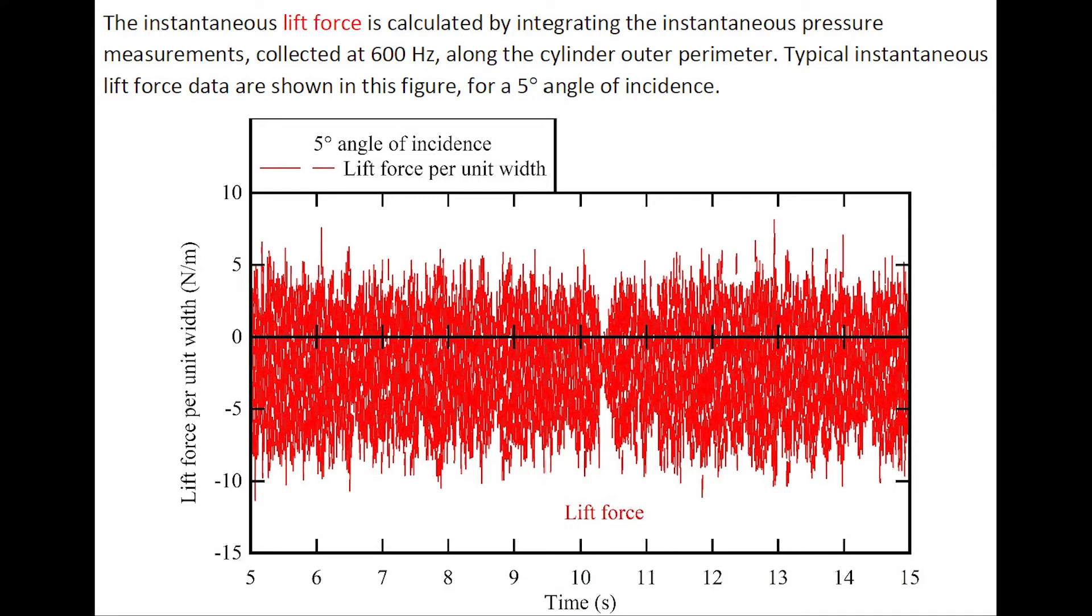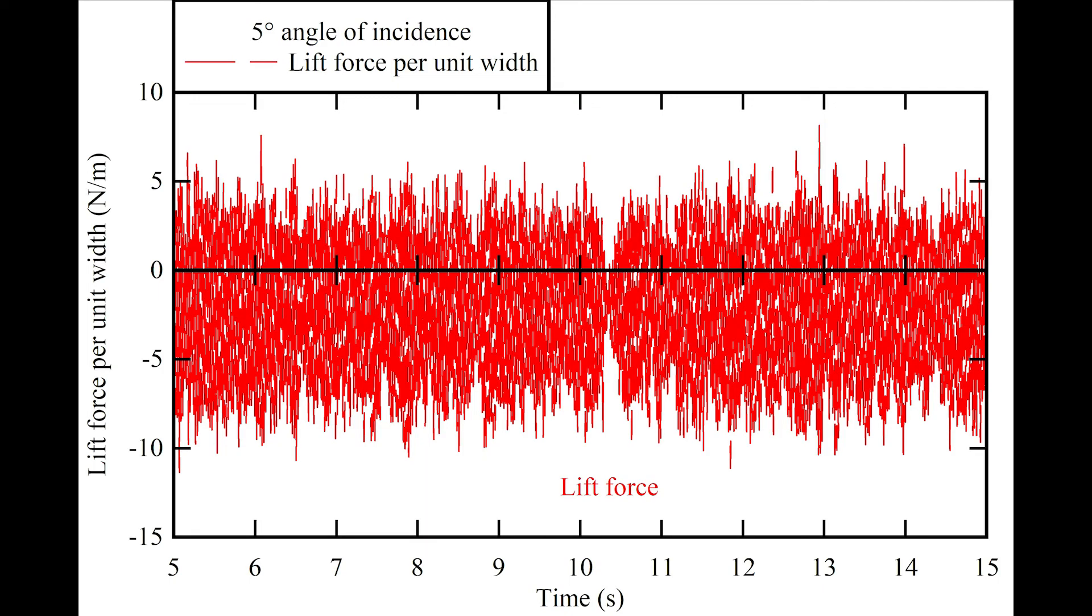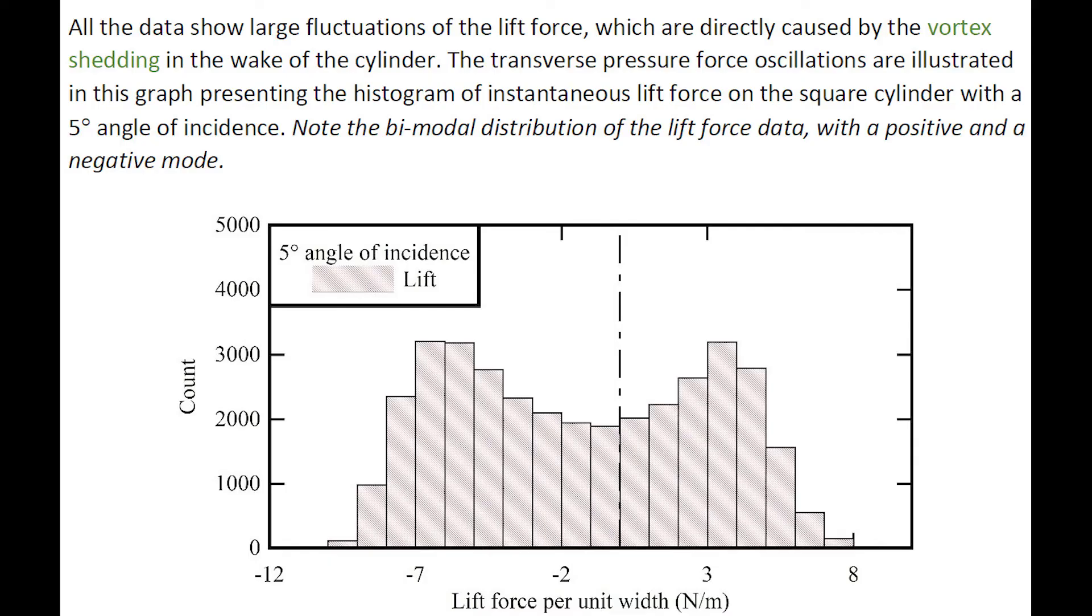The instantaneous lift force is calculated by integrating the instantaneous pressure measurements collected at 600 Hz around the cylinder outer perimeter. Typical instantaneous lift force data are shown in this figure for 5 degrees of incidence. All the data show large fluctuations of the lift force.